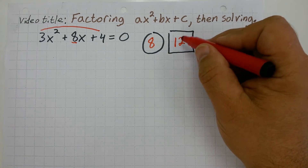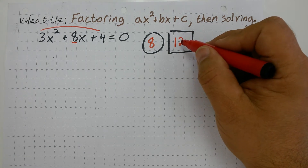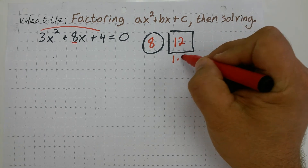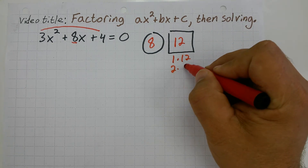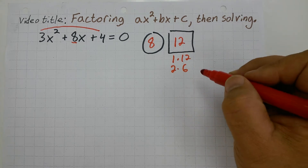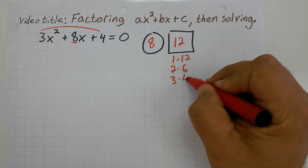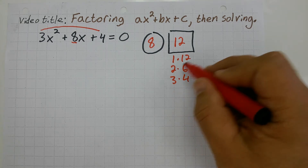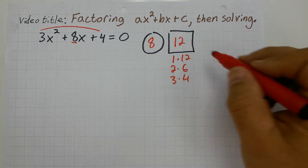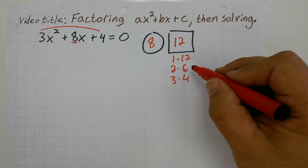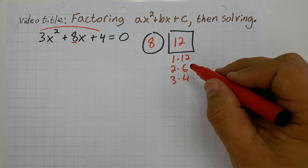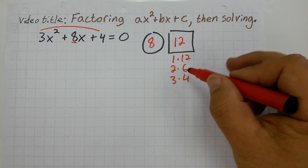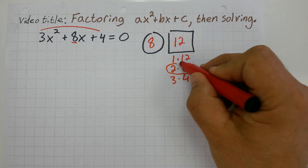Now I'm going to figure out what times what multiplies to equal 12. So: 1 times 12, 2 times 6 — that equals 12 — and 3 times 4, that equals 12. What I need to find out is what adds up or subtracts to equal that middle number 8. In this case, it's 2 and 6.